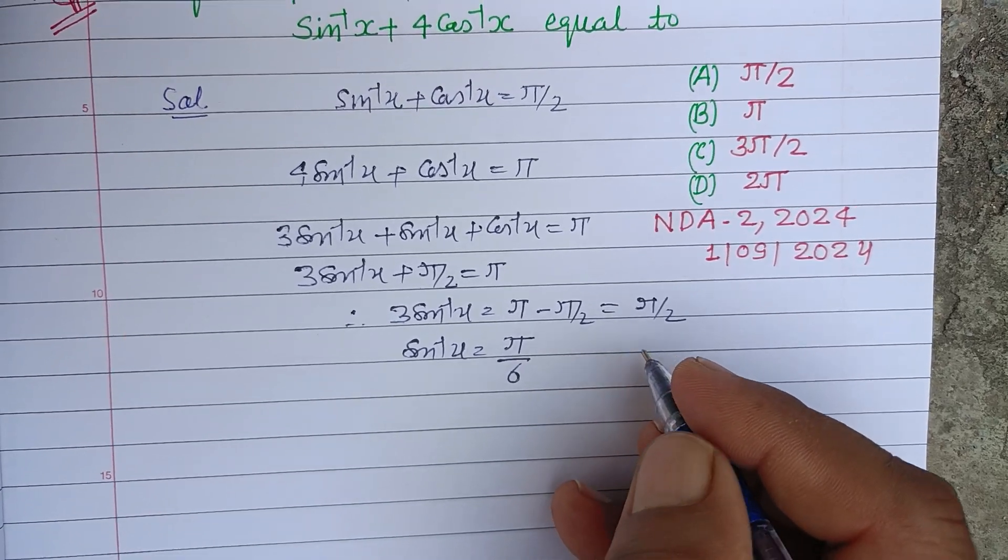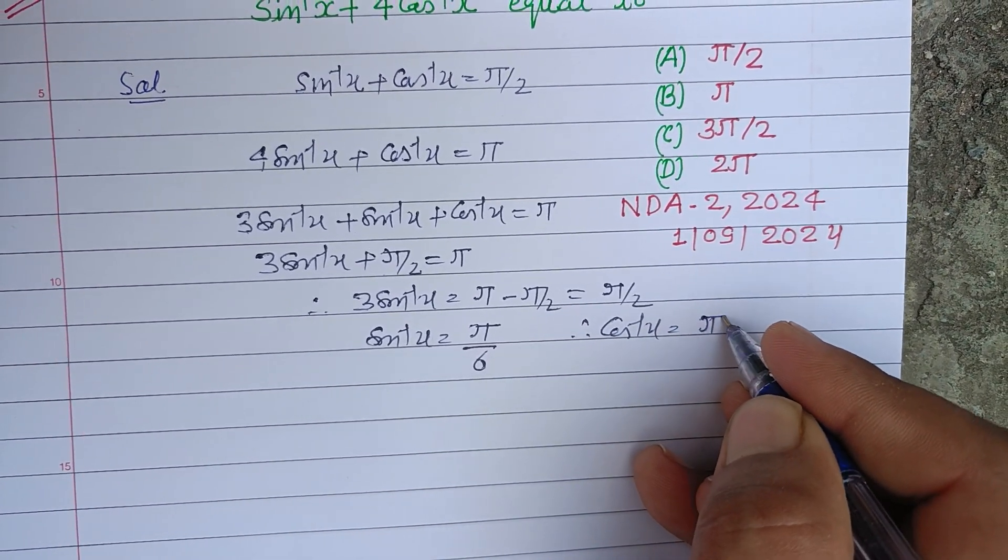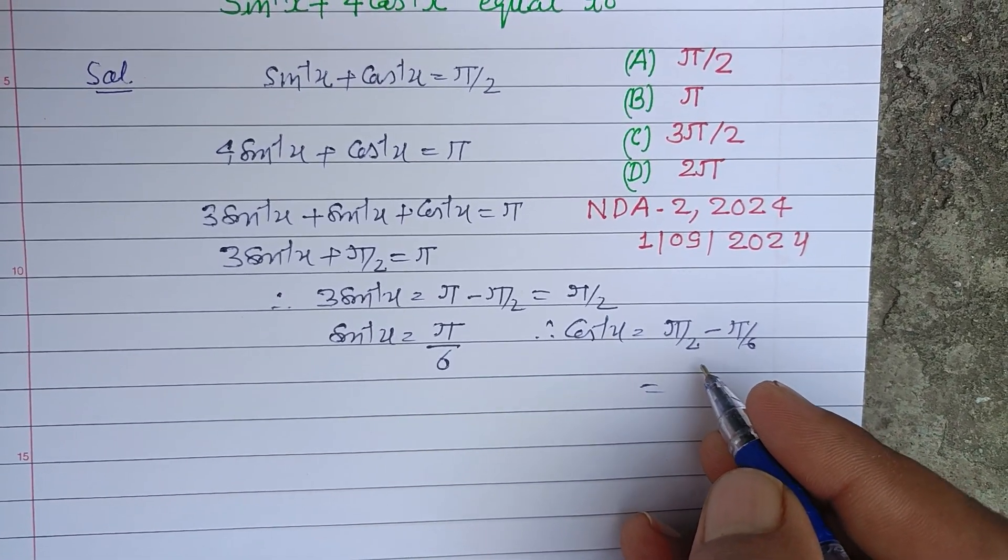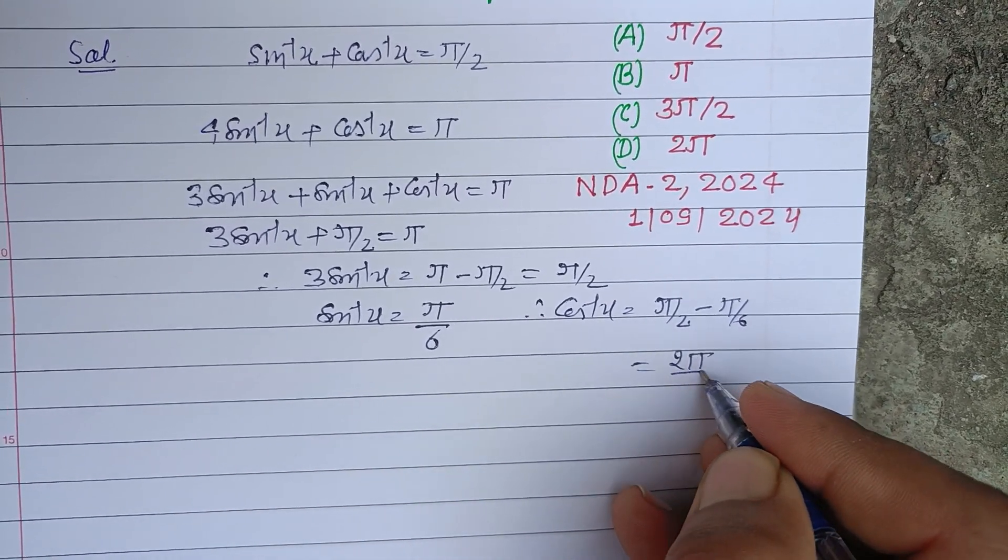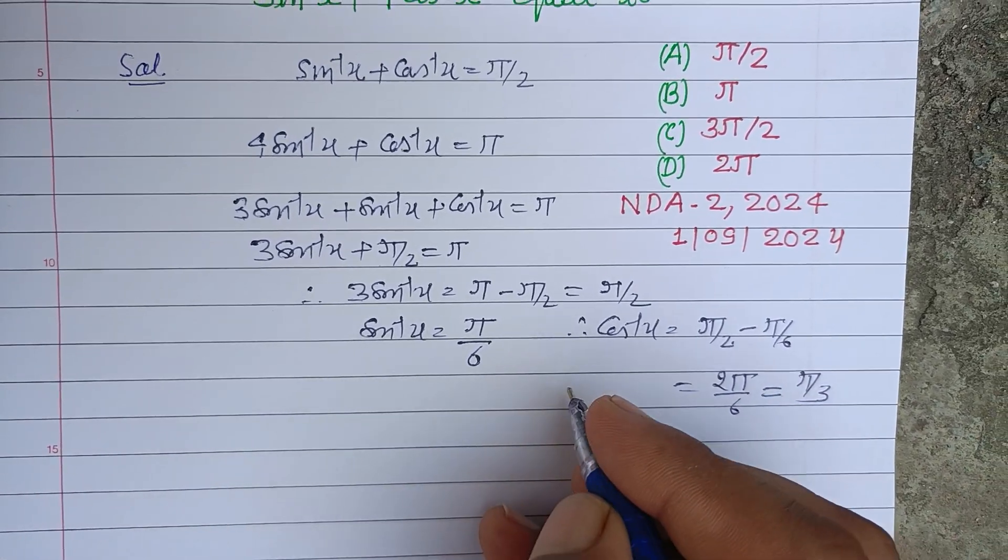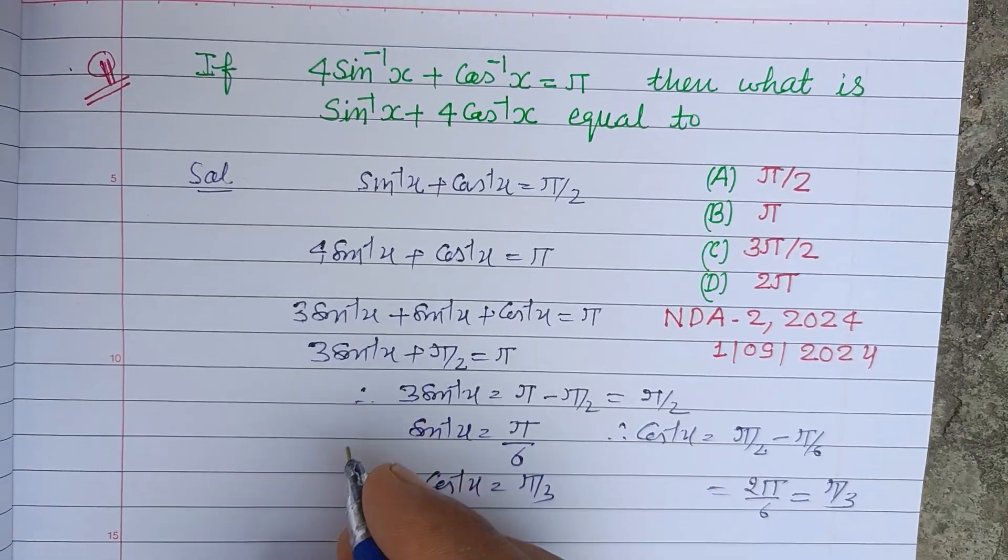Therefore cos⁻¹x = π/2 - π/6, that is 2π/6 or π/3. So cos⁻¹x = π/3.